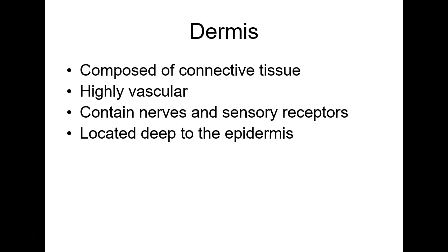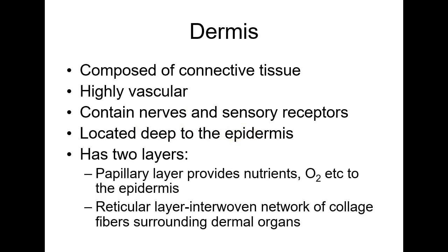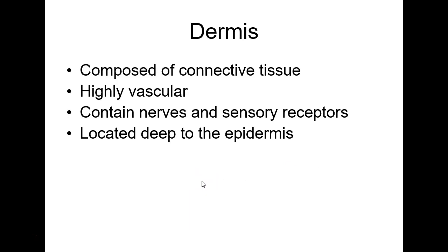This slide shows epidermal ridges and dermal papillae — those can make up your fingerprints. The dermis is mainly connective tissue, highly vascular, with blood vessels, nerves, and receptors. It is deep to the epidermis and has two layers: the papillary layer, where blood vessels are located to deliver nutrients and O2 to the epidermis, and the reticular layer below.